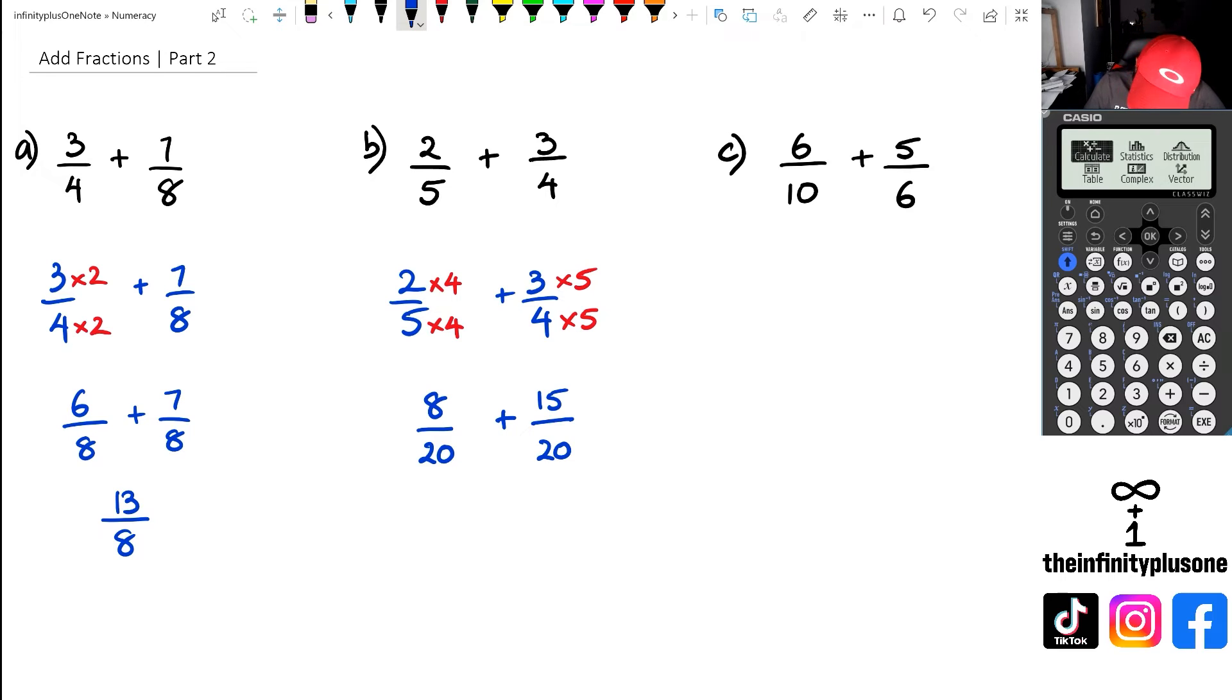Now at this point, I am actually going to write this as 20 as my common denominator, because they're the same numbers, 15 plus eight, which equals to 23.